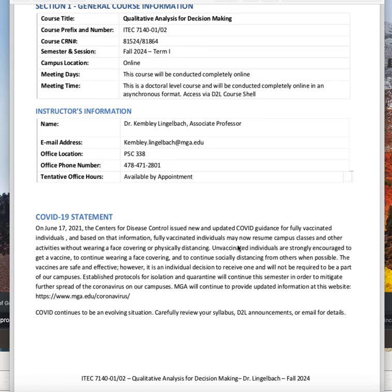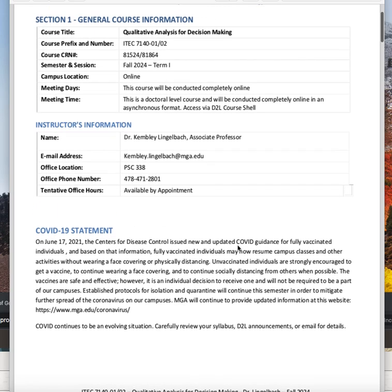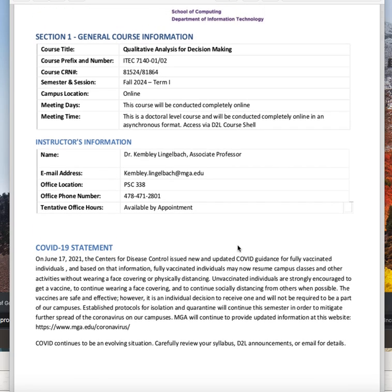You can reach me through my email address at Kimberly.Lengelbach.mga.edu. I am in the Professional Science Center upstairs if you happen to be on campus, and our office number is 471-2801. You can also reach me through Teams, and if you need to talk to me we can set up an appointment through email to have a Teams meeting or even on the telephone.